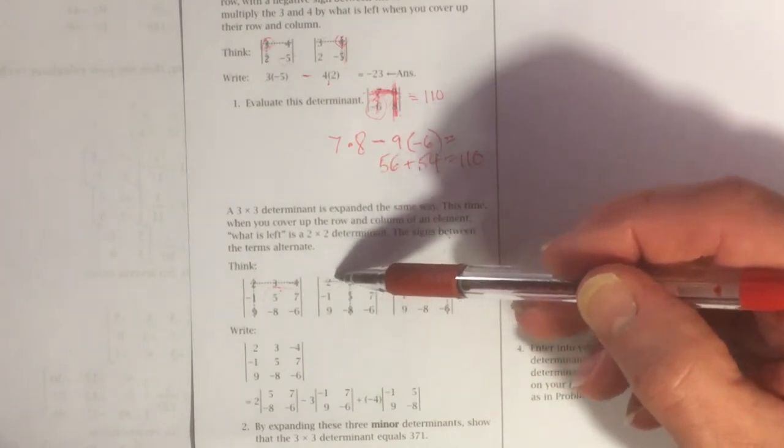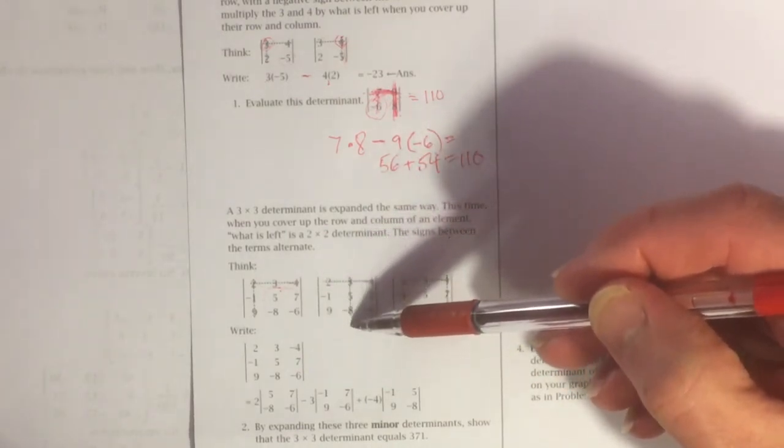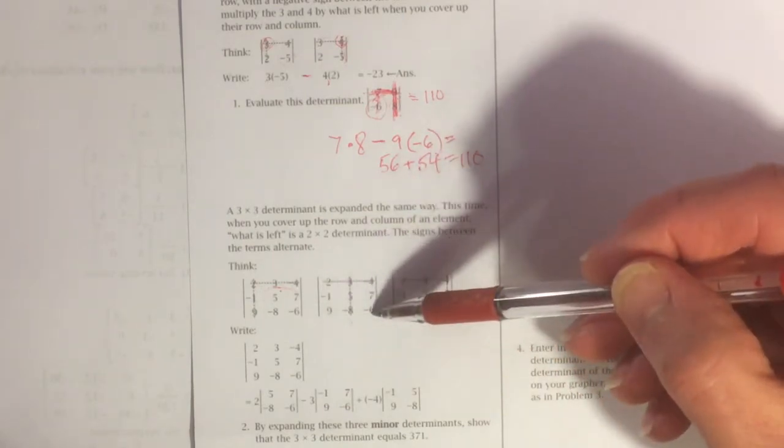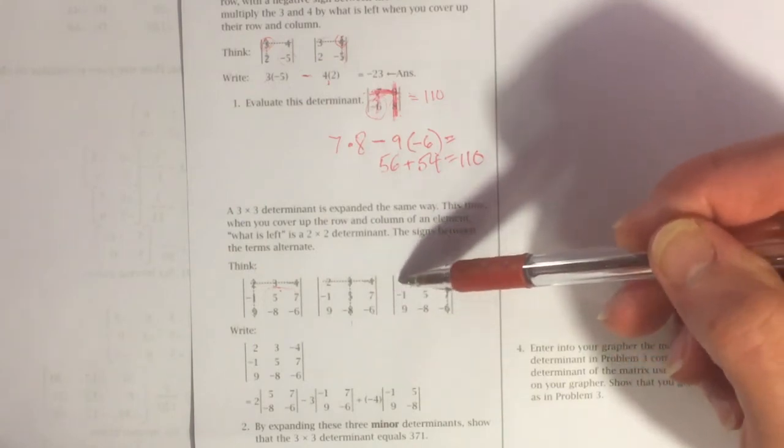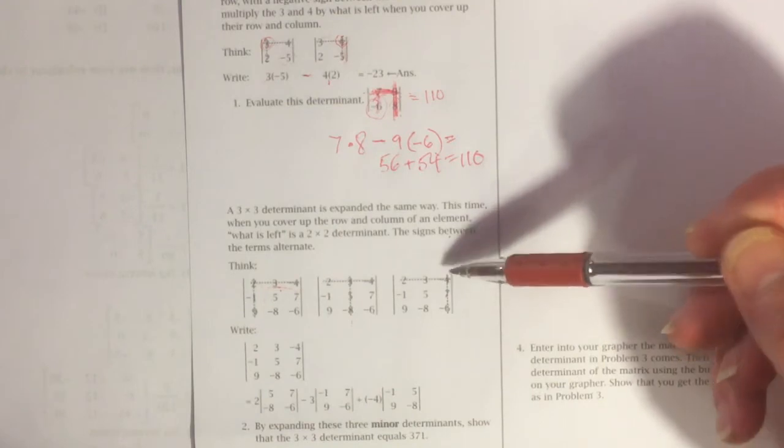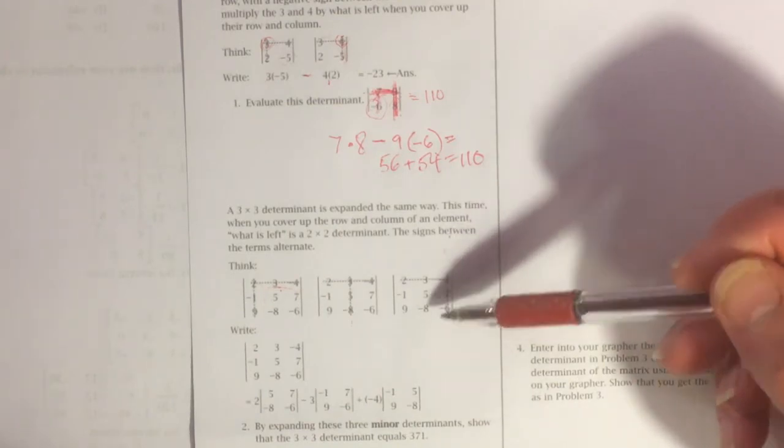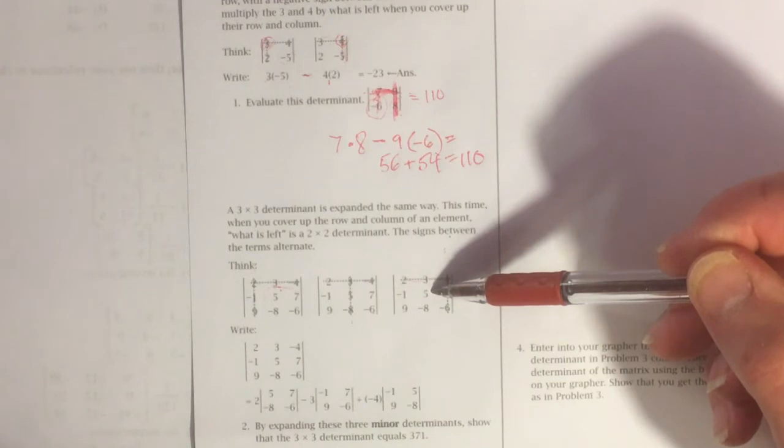And then doing the same thing here, crossing out the first row, crossing out the second column, and using these four elements as a matrix to find the determinant of that. And then finally crossing out the first row, crossing out the last column. You take these remaining elements, make a matrix out of it, and get the determinant of that.